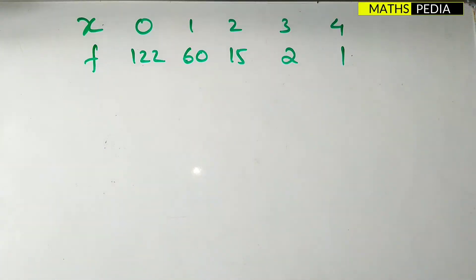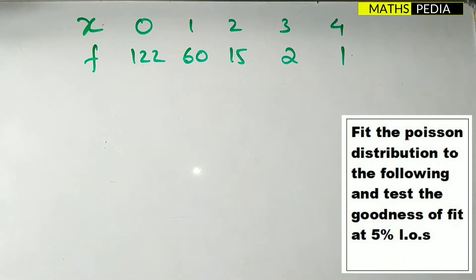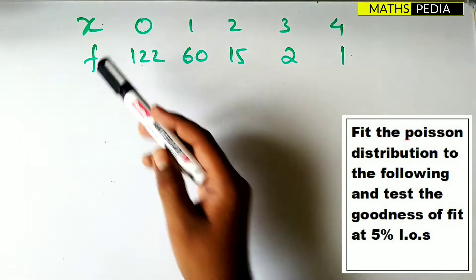In this video we are going to solve one problem based on chi-square test in which we are going to discuss the Poisson distribution problem. So let us see the problem first. Fit a Poisson distribution and test the goodness of fit. Use 5% level of significance. So here also you can see the experiment is not known. That means we don't know what is the experiment. They have just mentioned the x and f values.